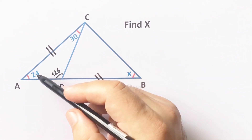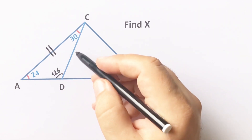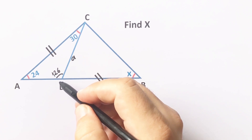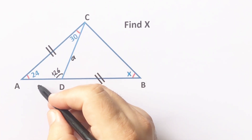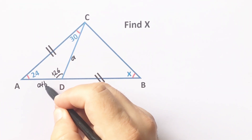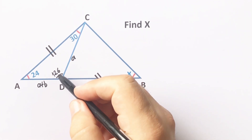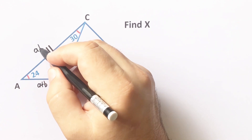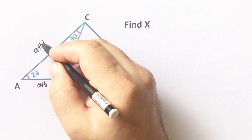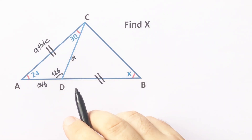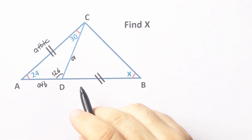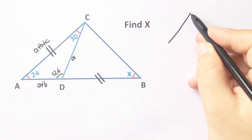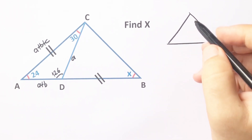This side is the smallest side of triangle ADC because it is opposite to 24 degrees. So if we call here one unit 'a', this length is bigger than a, so let's call here a plus b, and this side is the biggest side, so let's call here a plus b plus c.